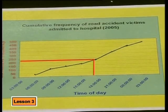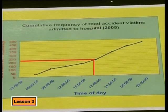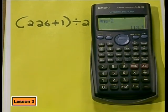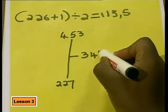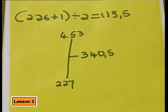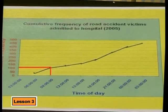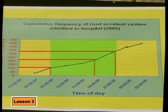Let's see if the inter-quartile range is useful here. We find the positions of the lower and upper quartiles in the same way as the median. There are 226 values below the median and 226 above. The lower quartile's position is at 113.5 and the upper quartile's position is halfway between 453 and 227, which is 340.5. We find the value of the lower quartile at about 9 am and the upper quartile at about 9 pm. So the inter-quartile range is from 9 am to 9 pm, meaning half of the road accidents happen during this time.